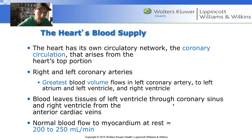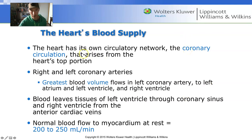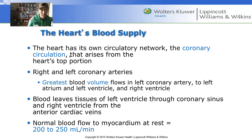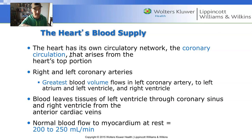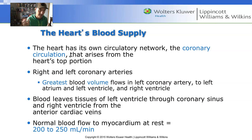The heart has its own circulatory network — blood vessels that directly feed the myocardium. That circulation is called coronary circulation, which is where we get the term coronary heart disease. The coronary blood vessels supply the myocardium, and if there is blockage in one of those coronary vessels, someone can be diagnosed with coronary heart disease. If it progresses to a certain point, the risk of heart attack increases because the myocardium needs a constant supply of oxygen-rich blood.